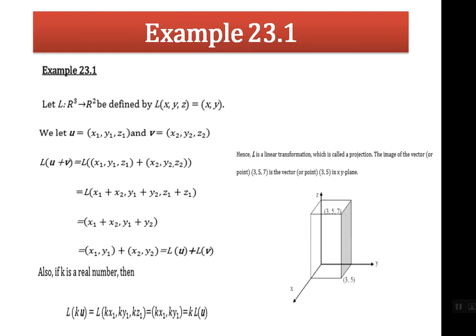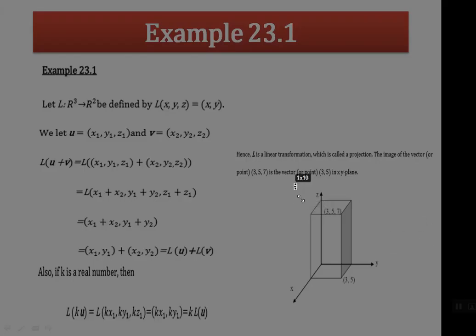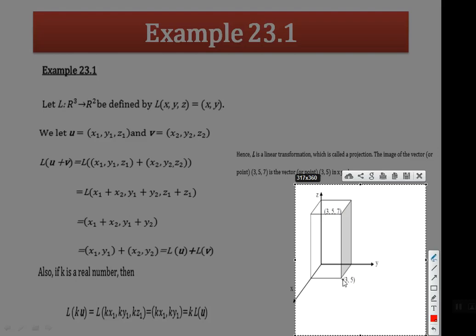Hence L is a linear transformation called a projection. Going further in transformation properties, transformations can be reflection, projection, and also rotation of an object. The image of a vector or point (3, 5, 7) — where 3 is x1, 5 is y1, and 7 is z1 — maps to (3, 5), going from 3D to 2D as given, split along a horizontal line to give (3, 5).